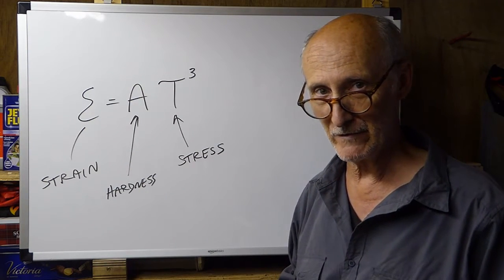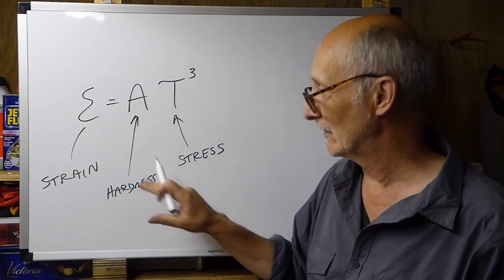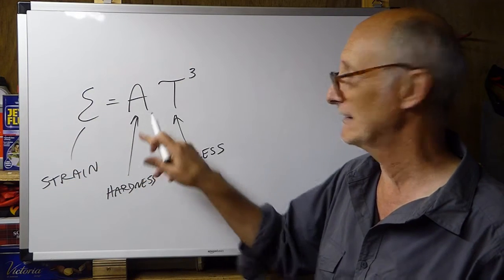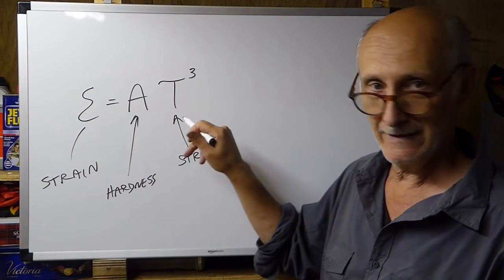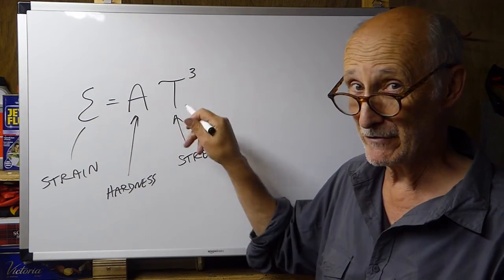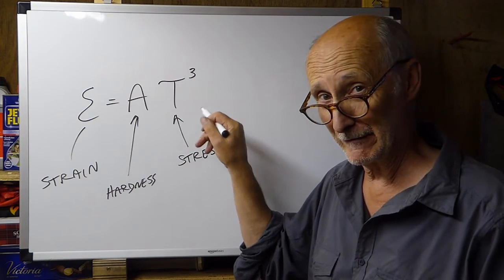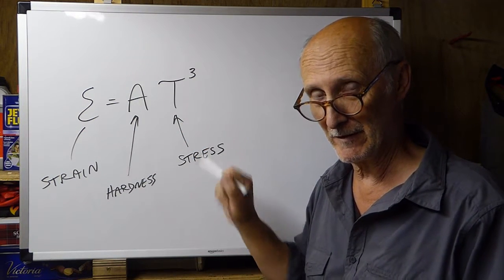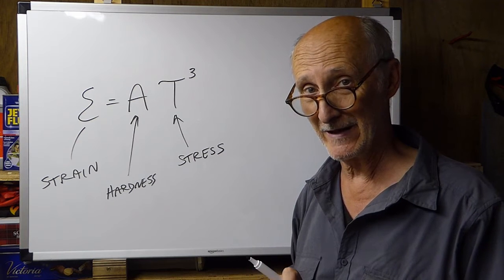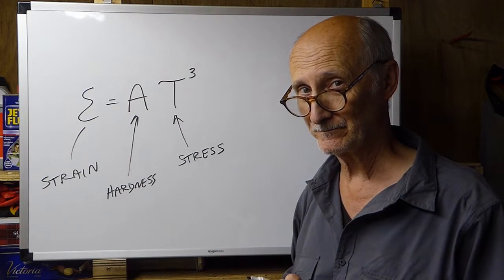The harder we push, the more deformation we get. So, that's Glenn's flow law. The amount of deformation you get in the ice depends on how hard the ice is and how hard you push. But the amount you push is really important because a small difference in the amount of stress that you're applying can make a big difference to the amount of strain that you get.